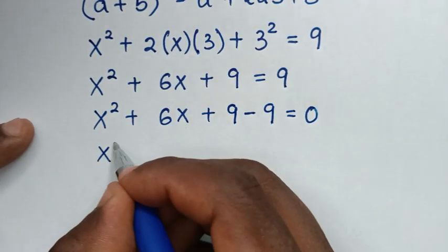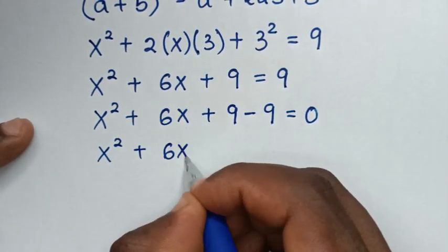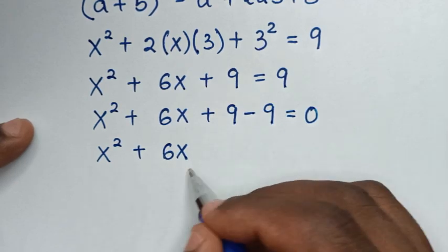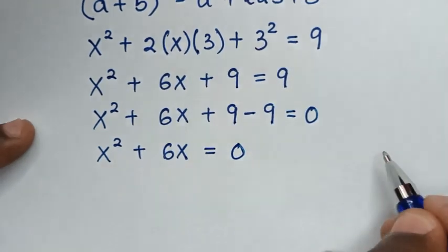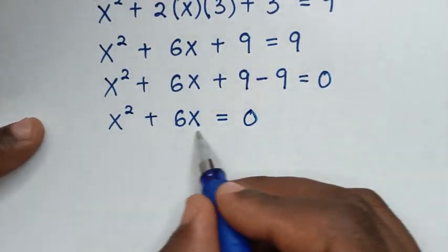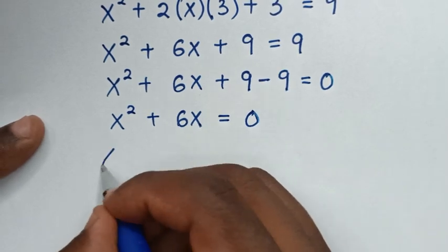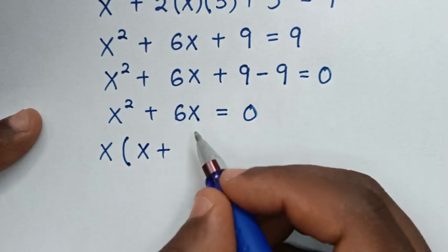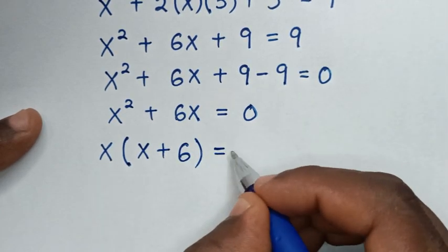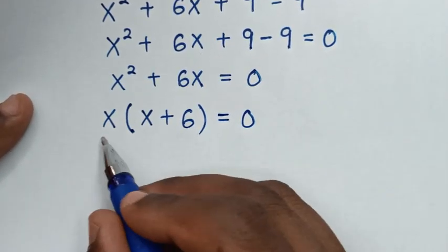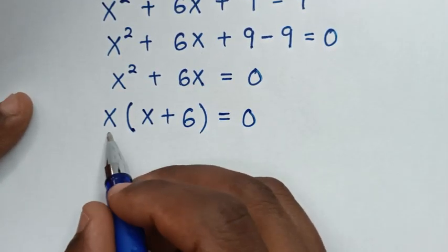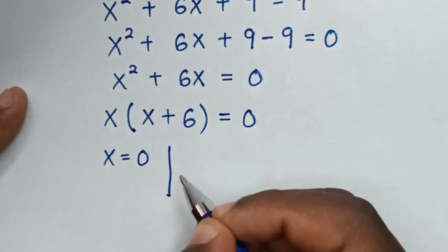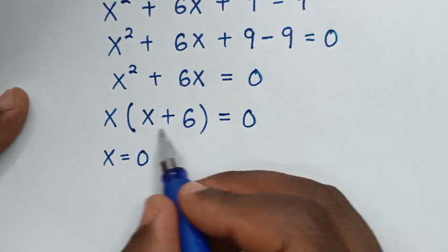Then it will be x² + 6x, and 9 minus 9 is 0, so it becomes x² + 6x = 0. In the next step, x is common so we factorize — we take x out of the bracket: x(x + 6) = 0. From here we have two solutions: the first solution is x = 0.